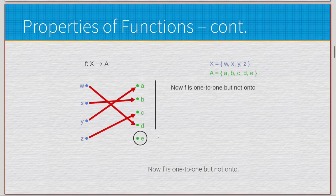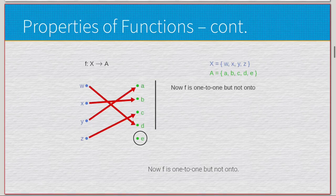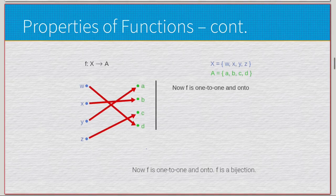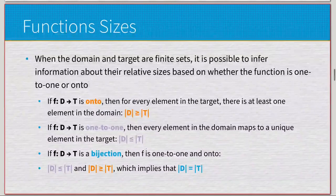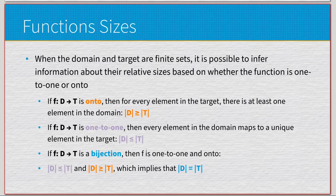To fix this: if instead we have w mapping to d, now a, b, c, and d are each mapped uniquely, making it one-to-one. It's still not onto because e is not being mapped. The only way to fix that is to remove e entirely — now it is both one-to-one and onto, therefore it is a bijection.